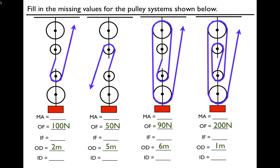For each problem, we have the pulleys and the output force — this is the object we're trying to raise. The purple thing is the string you pull on. In each case, you're given the output force and the output distance, and you're supposed to get the mechanical advantage, the input force, and the input distance. My hope is that when we go through these four problems, you will see the pattern that develops — how the pulleys work — and if you see the pattern, it'll help you get the answers and understand better how they work, the equations and things like that.